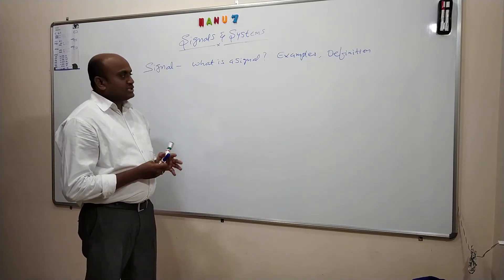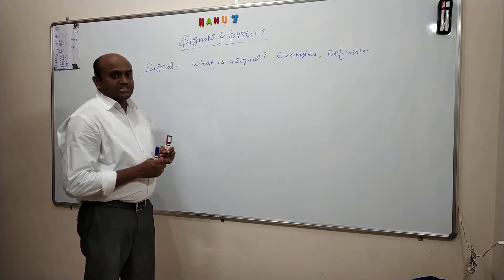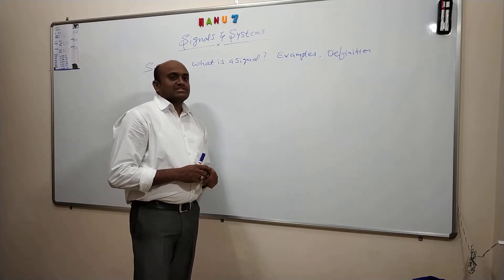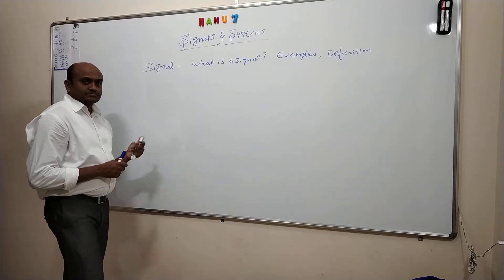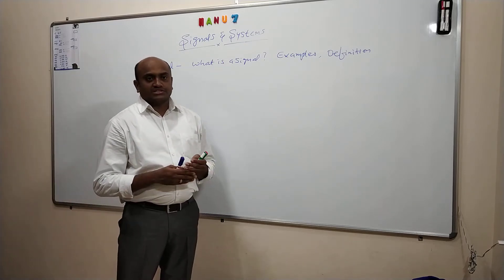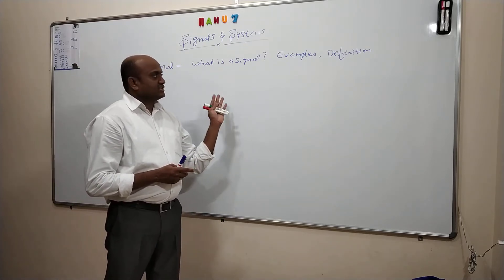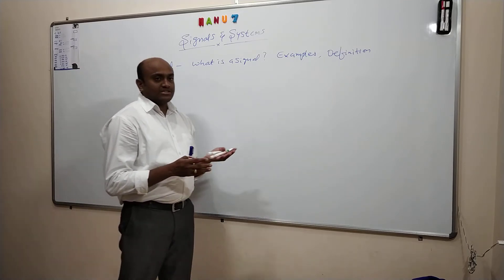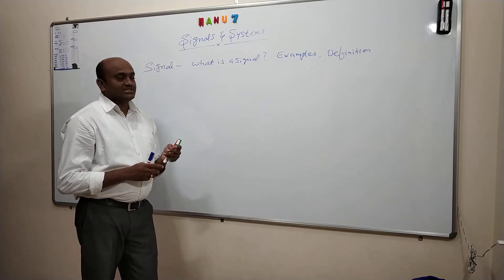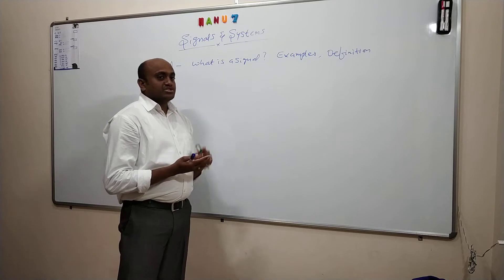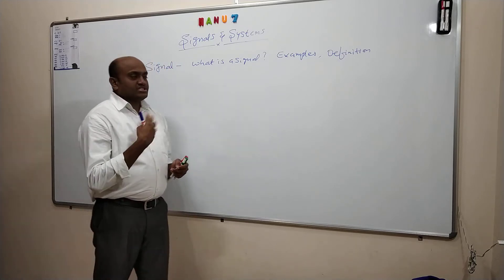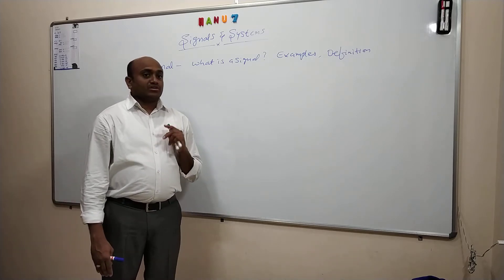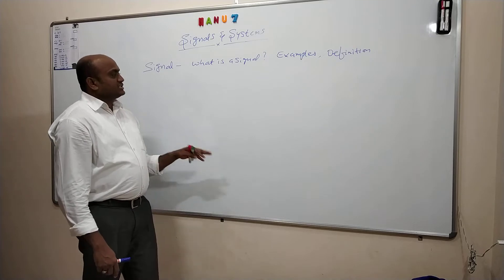Now let us look at examples in engineering terminology. Signal examples are of two types: electrical signals and non-electrical signals. Electrical signals are voltage, the telephone signal, radio signals, TV signals, etc. Whatever current we have — all these are examples of electrical signals. Coming to the non-electrical category, we have sound signals and pressure signals. The voice you are hearing right now is itself a signal, which is a sound signal — a non-electrical signal.